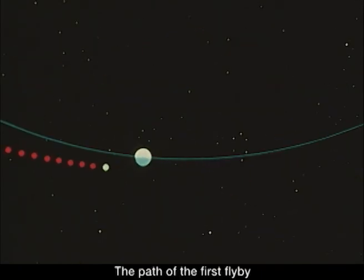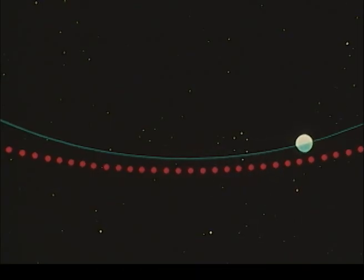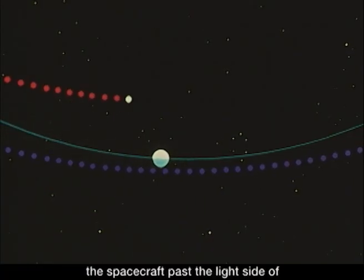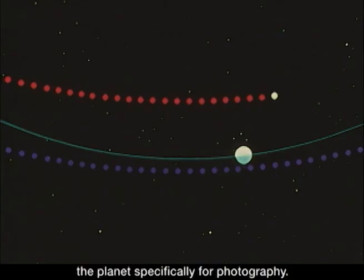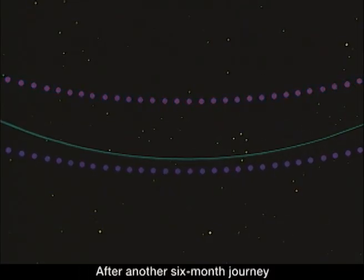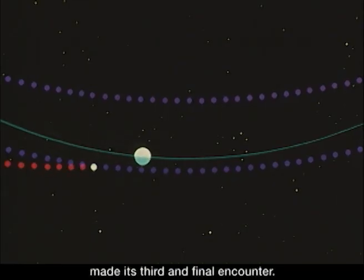The path of the first flyby was on the dark side of Mercury. The second encounter sent the spacecraft past the light side of the planet specifically for photography. After another six-month journey around the Sun, Mariner 10 made its third and final encounter.